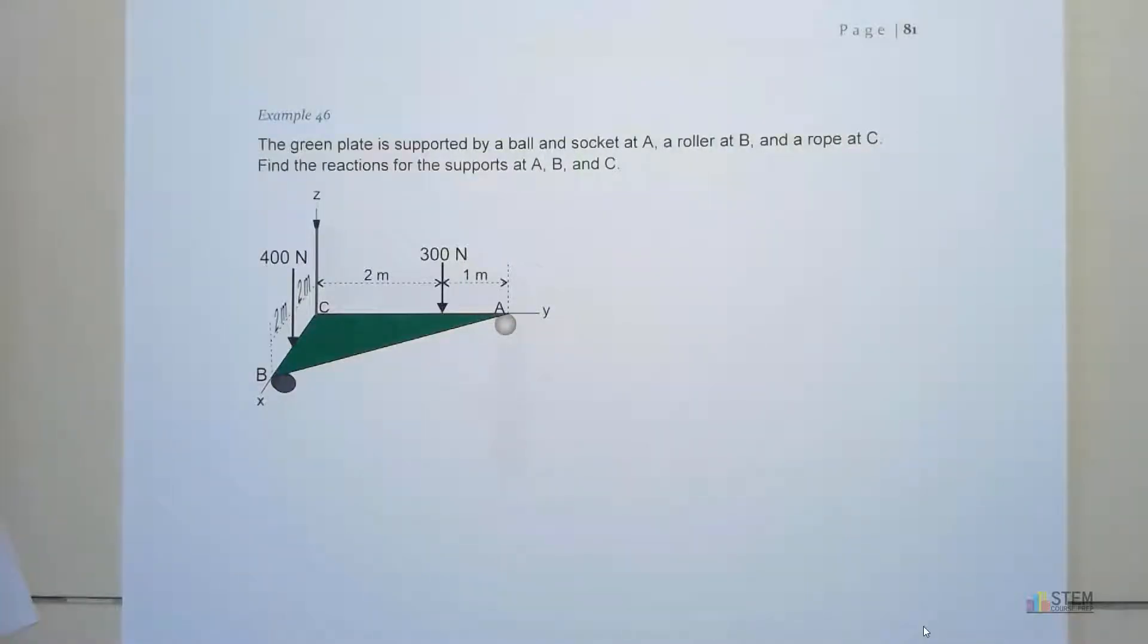Example 46. This is our first example for 3D rigid body equilibrium. We've got this green plate that's going to be supported by a ball and socket support at A.